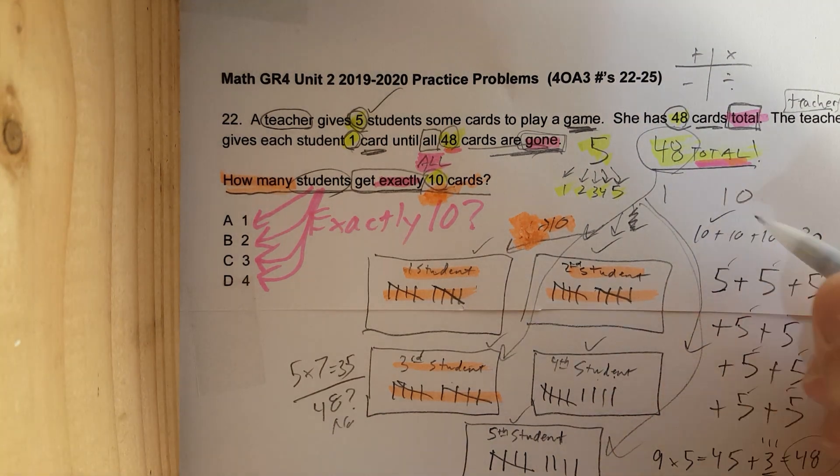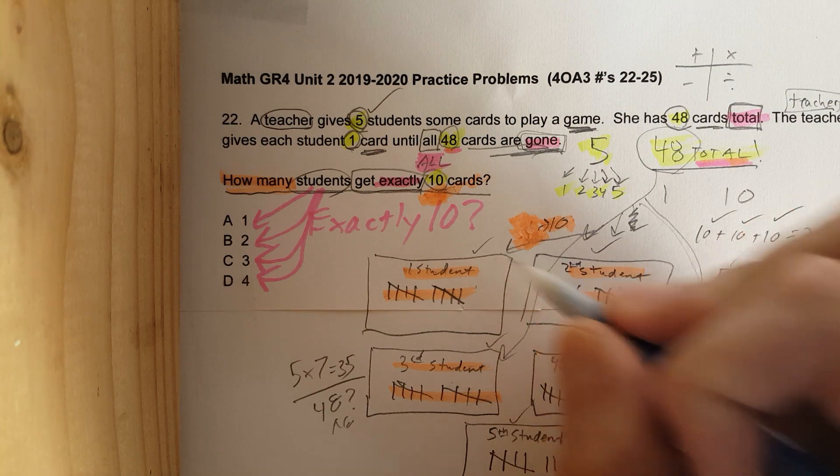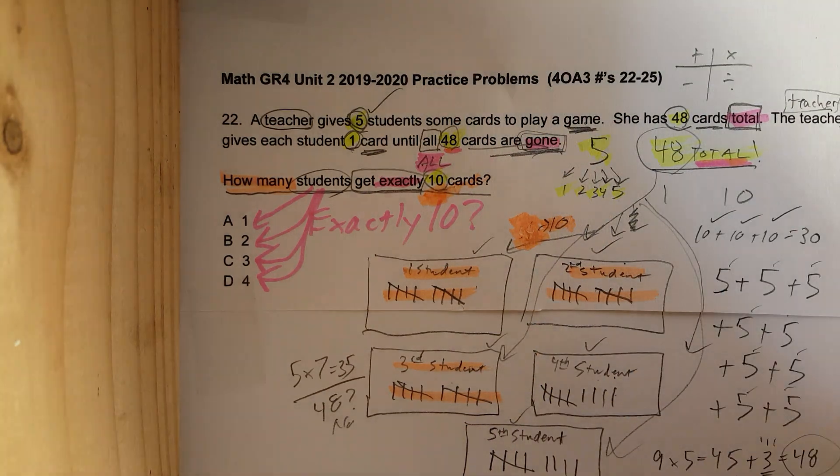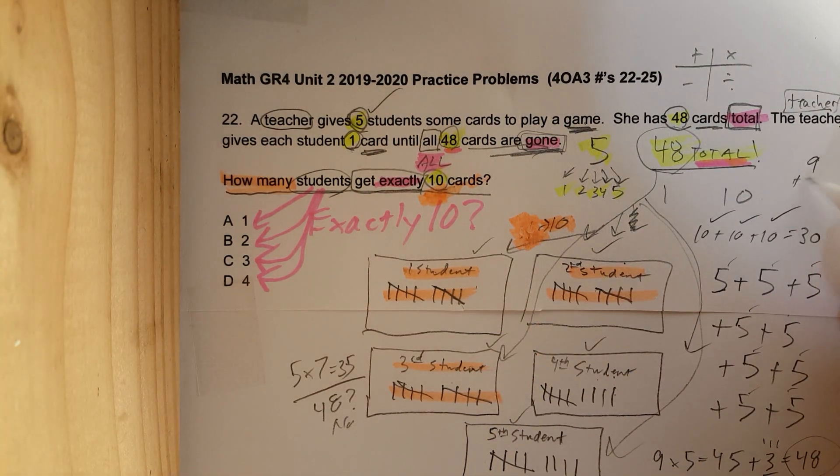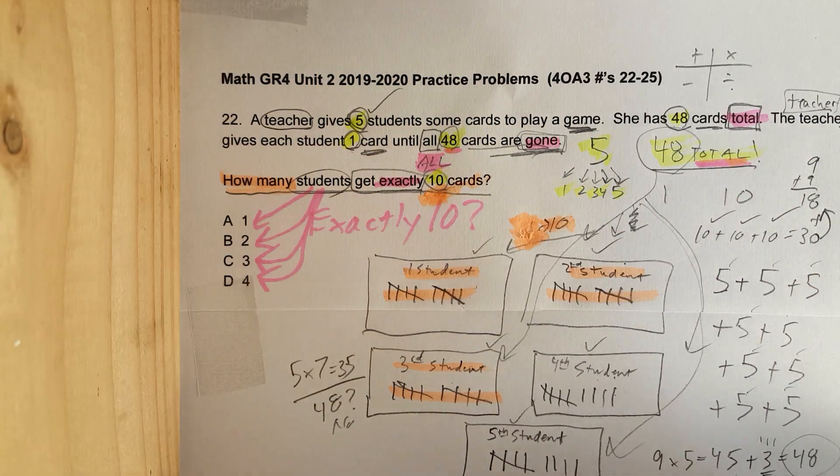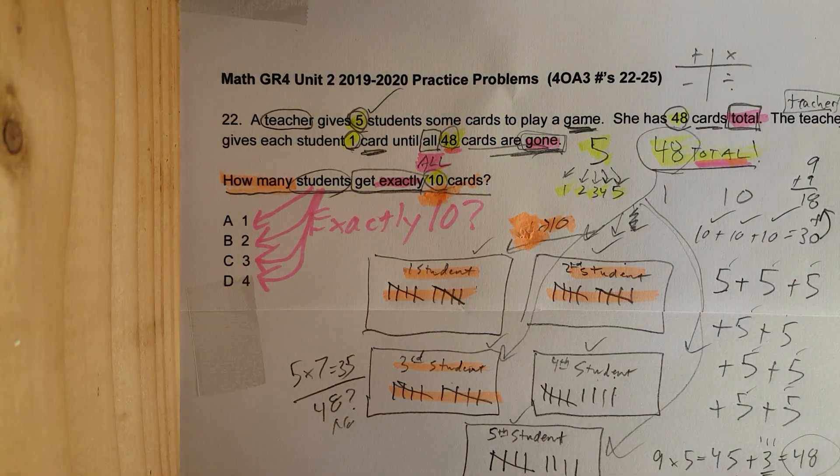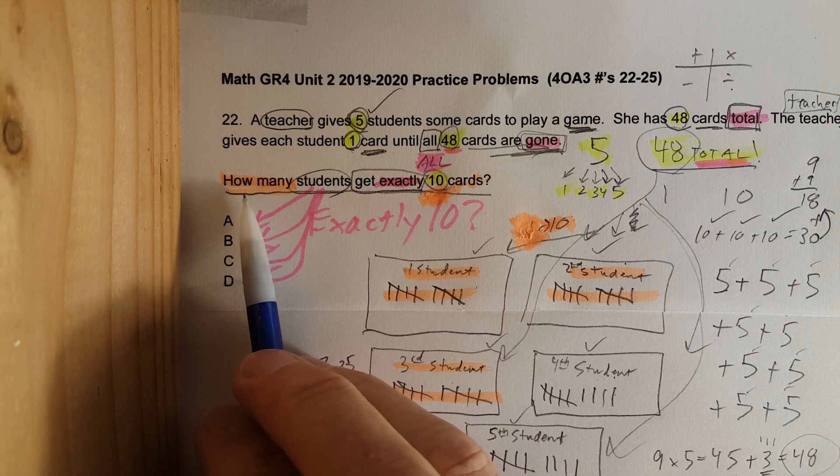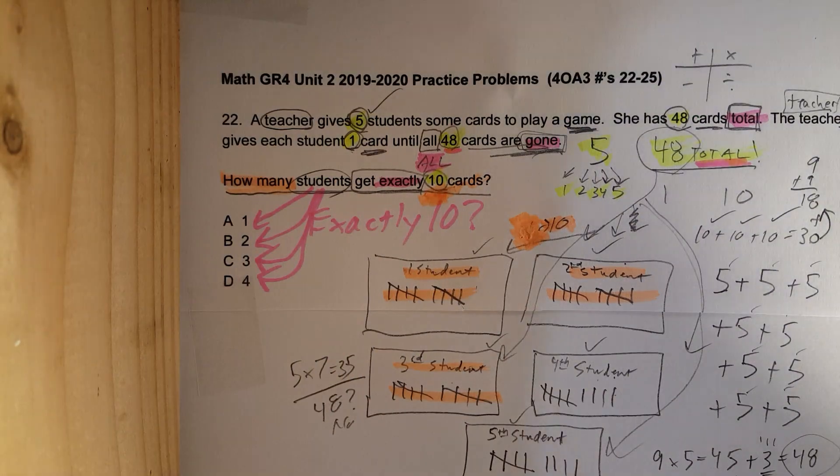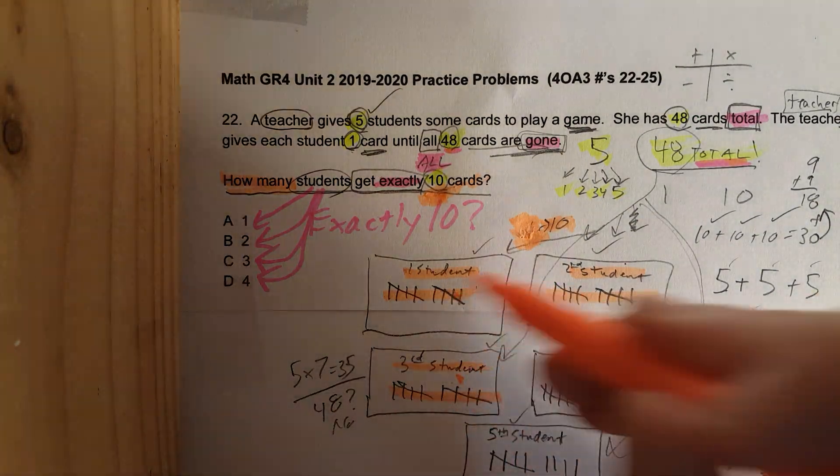Check, check, check. But there's nine and nine. Let's make sure. If I write nine plus nine, this is 18. 30 plus 18 gets us 48. So all 48 cards have been distributed. Let's answer our question: how many students get exactly 10 cards? It's right there. Three.